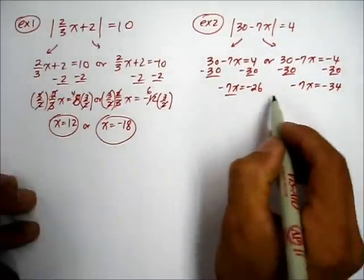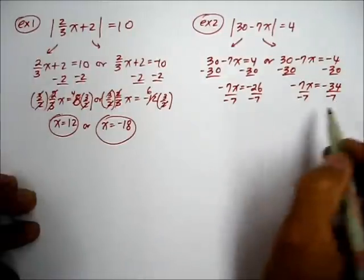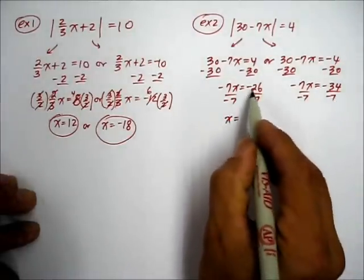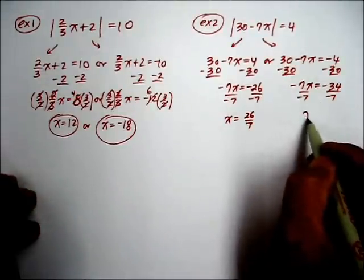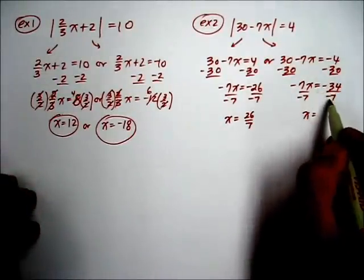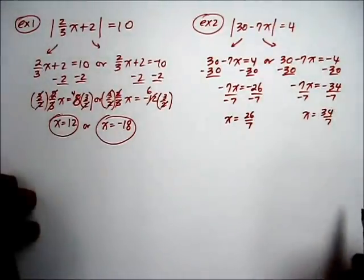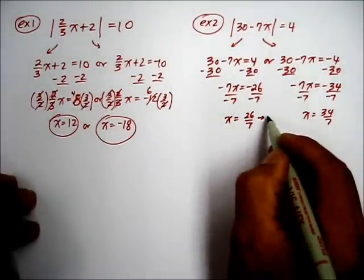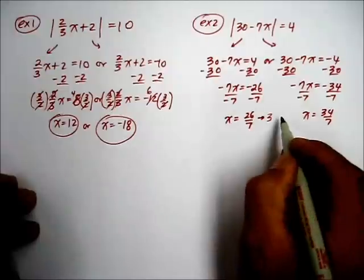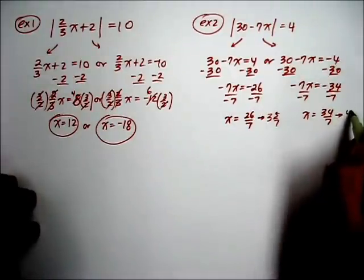To solve for x, we divide by the coefficient -7 on both sides of the equation. So x equals — negative divided by negative becomes positive — 26/7. And here, x equals — again negative divided by negative becomes positive — 34/7. Just for a visual, 26/7 is like saying 3 and 5/7, and this one is like saying 4 and 6/7.